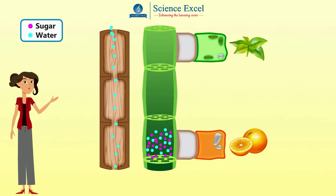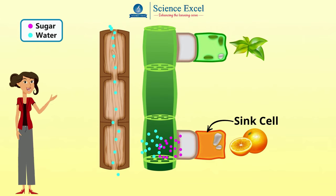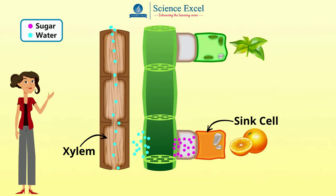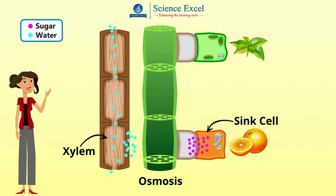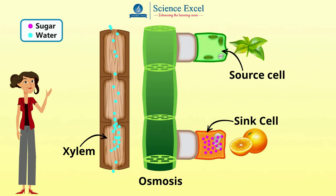As the sugar enters inside the sink cells, the water now moves back to the xylem again by the process of osmosis. So finally, in this manner, the sugar moves from the source cells to the sink cells.